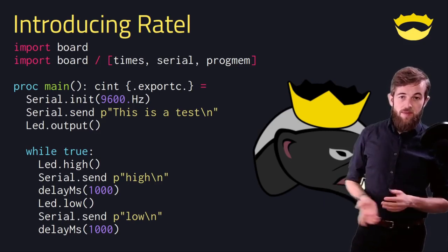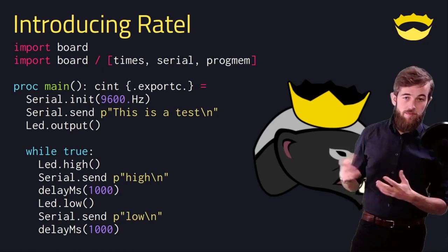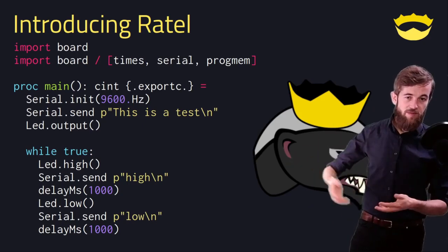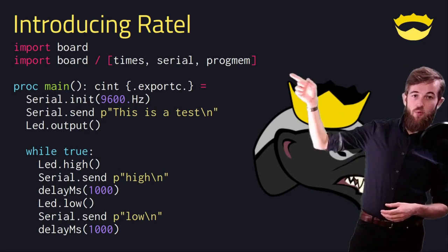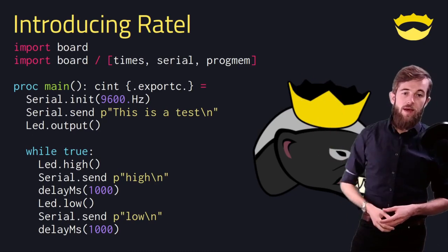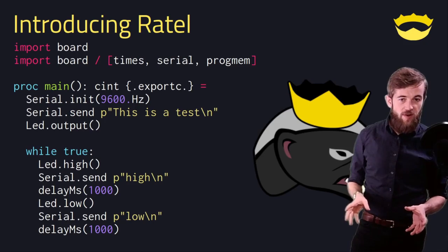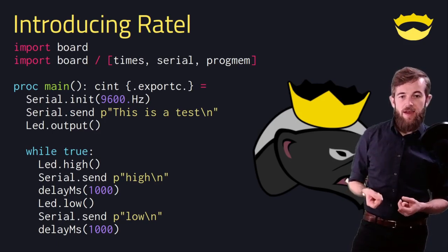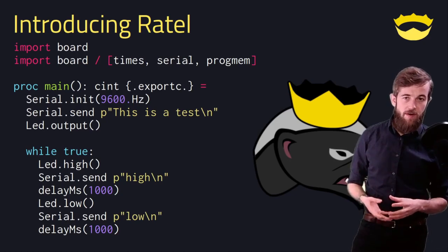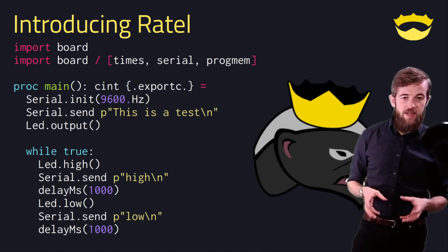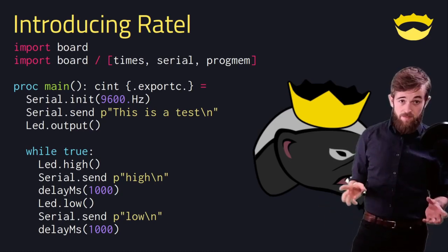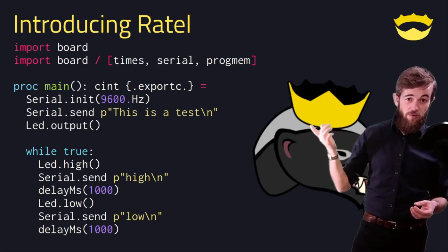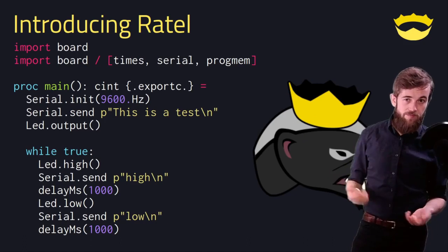Here is the Ratel implementation of the sample code I built for all the different targets. As you can see, we just import 'board' and import stuff from the board — no mention of which specific board we're importing from. This is on purpose: a compile-time flag defines which board you import from, so the code can look exactly the same between different boards, as long as both boards support the same features. Obviously if you don't have a serial port on your board, this code won't work.